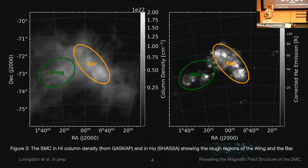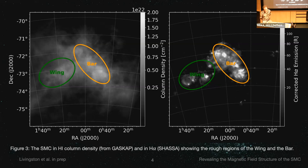The object I'll be talking about today is the Small Magellanic Cloud. The SMC is a low-mass irregular galaxy that is interacting with the Large Magellanic Cloud and the Milky Way. Galaxies like the SMC make up the bulk of galaxies today and also galaxies in the early universe. Our proximity to the SMC makes it a perfect target for observation to understand the magnetic fields of the bulk of galaxies within our universe.